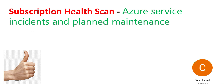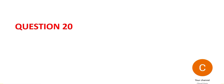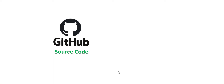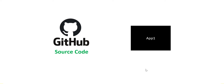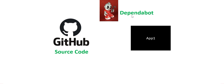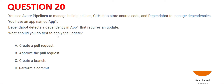Let's look at question 20. Your source code for App 1 is on GitHub. There is a bot called Dependabot. It checks whether the dependencies for App 1 are met and if an update is required, it will notify you. Out of the four options, what should we do first to apply the update?